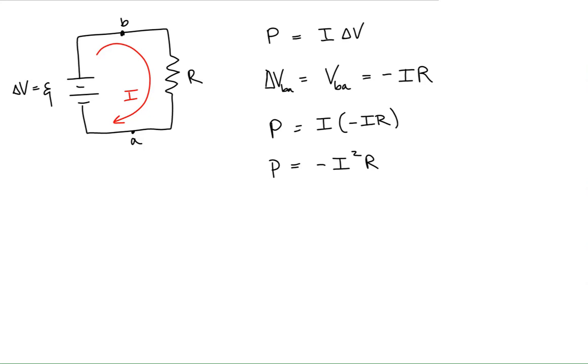we get that the power dissipated by the resistor is equal to minus the square of the current times the resistance. Now, this minus sign usually isn't left here.